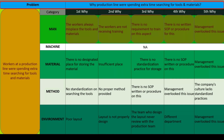Under Machine: there is no need to address this category, as the problem is not related to the machine. Under Material — First why: why are workers spending extra time? There is no designated place for storing materials. Second why: why no designated place? Insufficient space. Third why: why insufficient space? No standardization practice for storage. Fourth why: why no standardization? No written SOP or procedure. Fifth why: why no SOP? Management overlooked this issue.